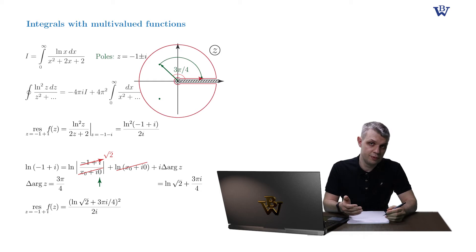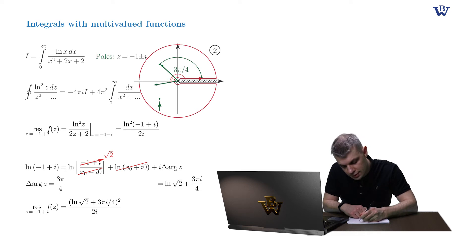In complete analogy, we compute the residue at point minus 1 minus i. The modulus of the complex number is the same. The only difference is the delta argument of z. Now obviously it adds pi by 2. So the change of the argument is going to be 5 pi by 4.